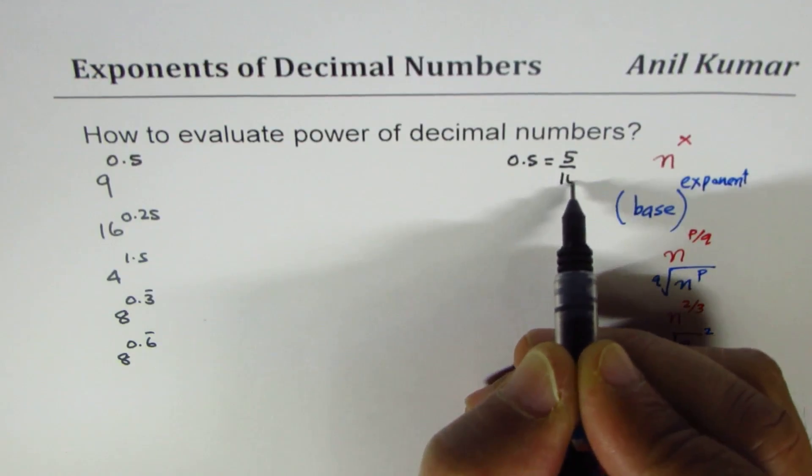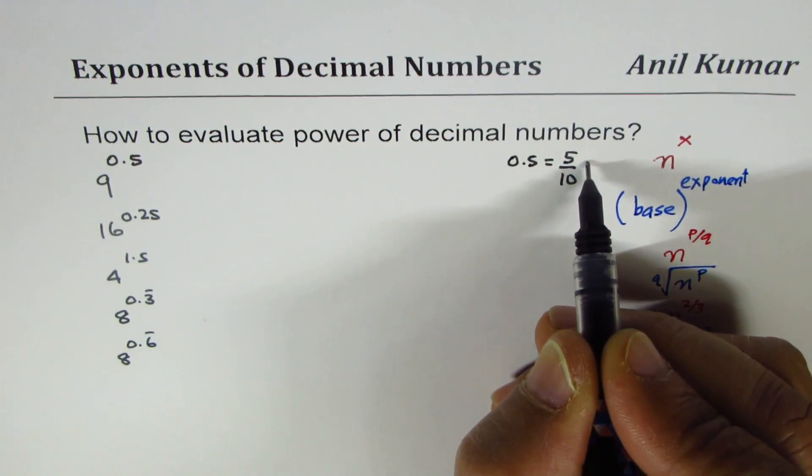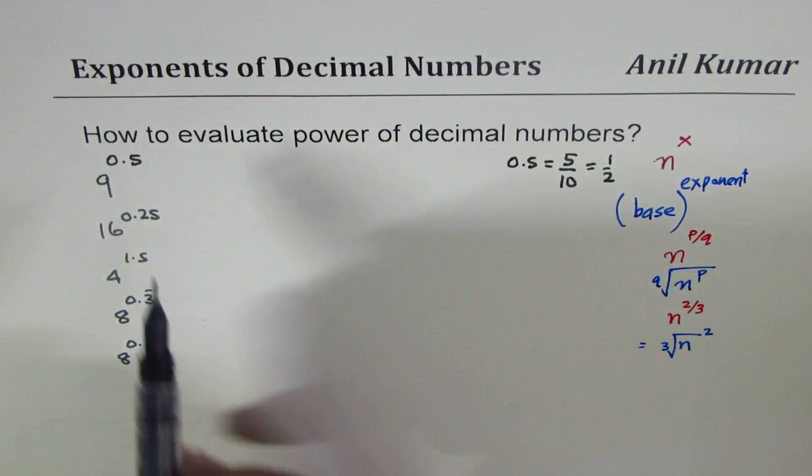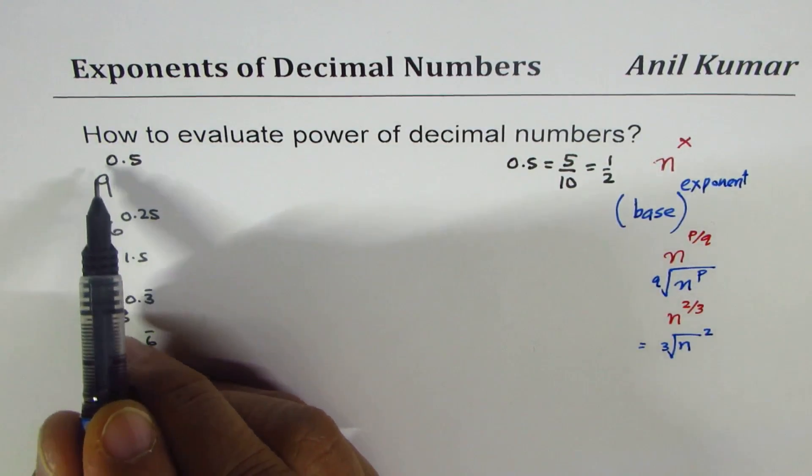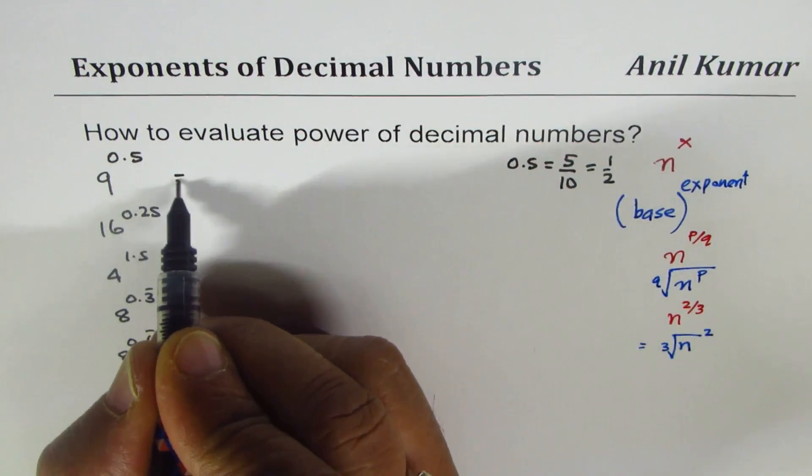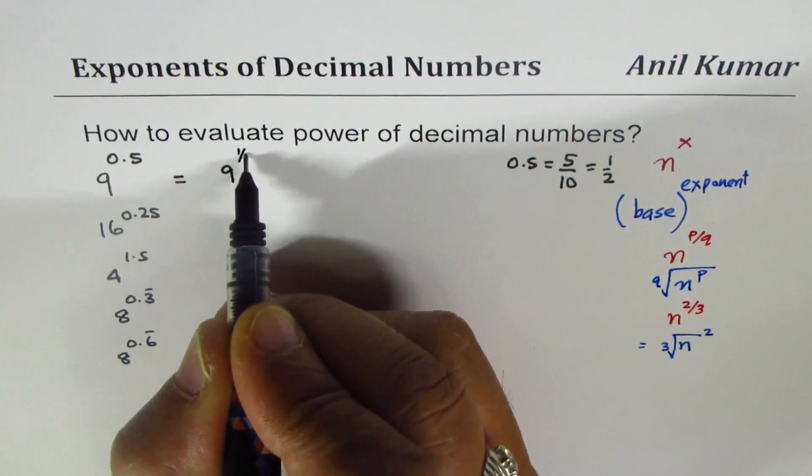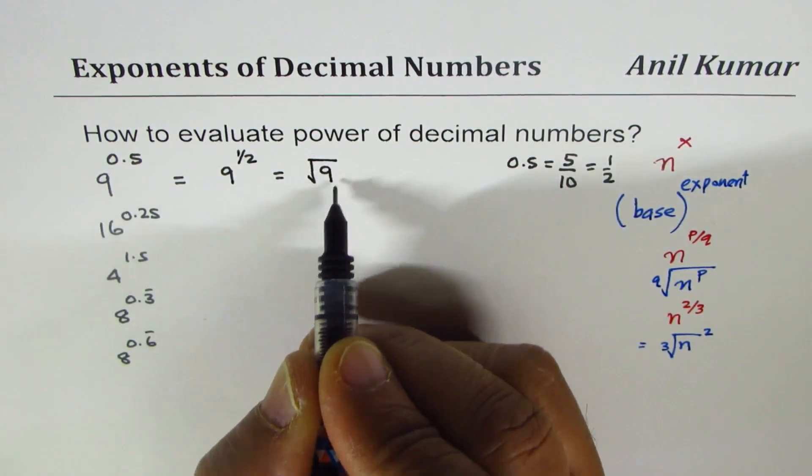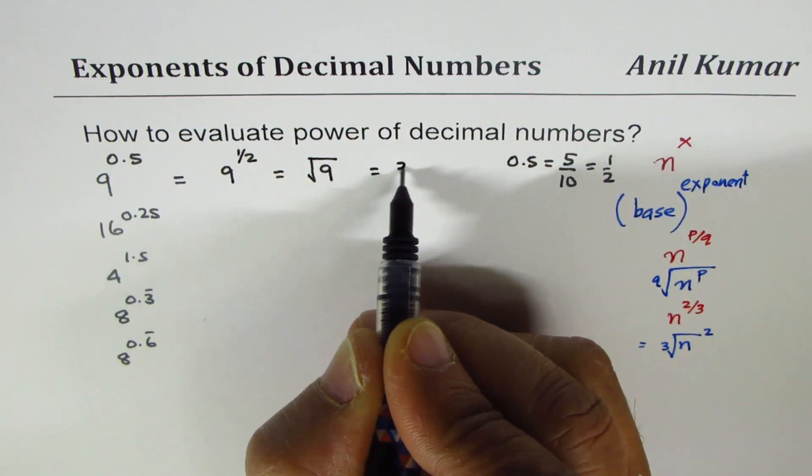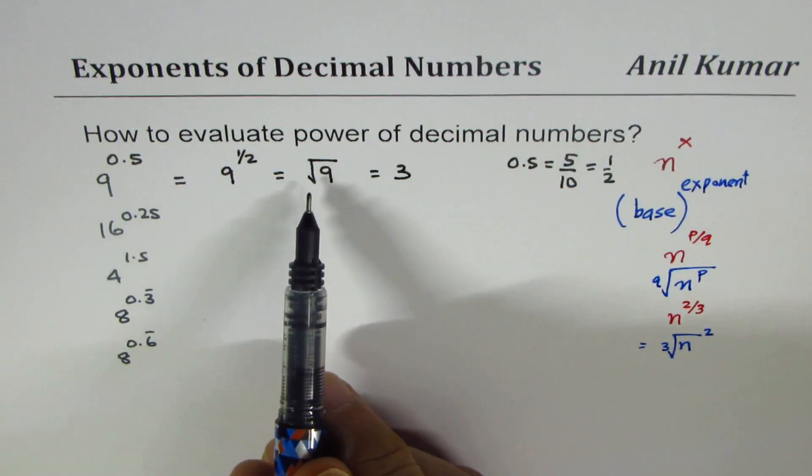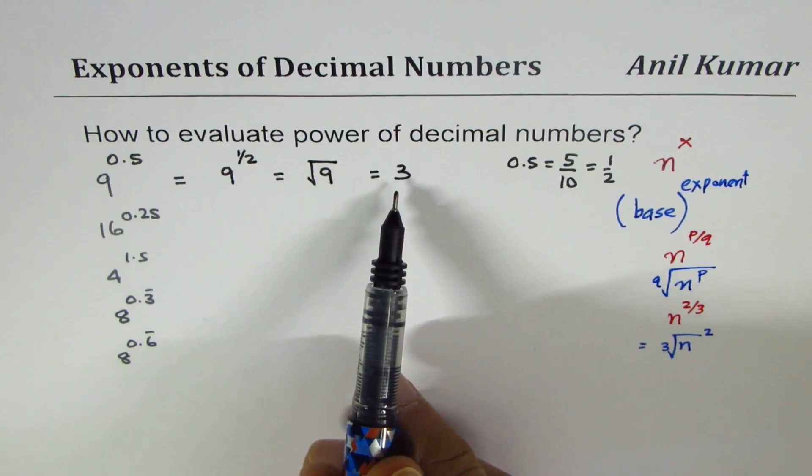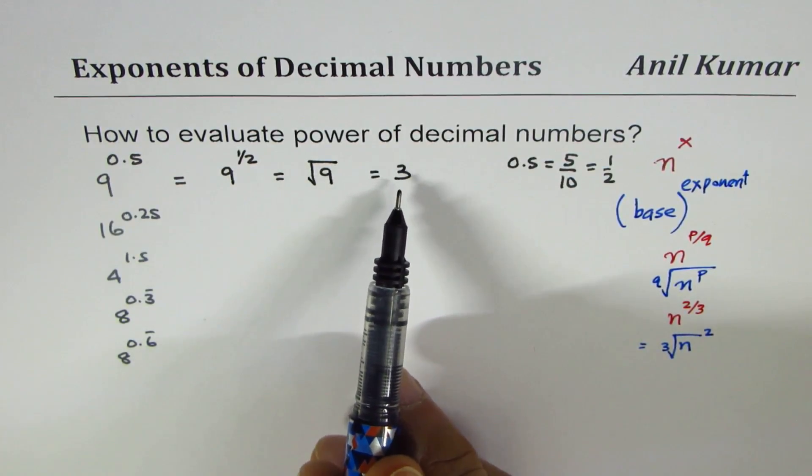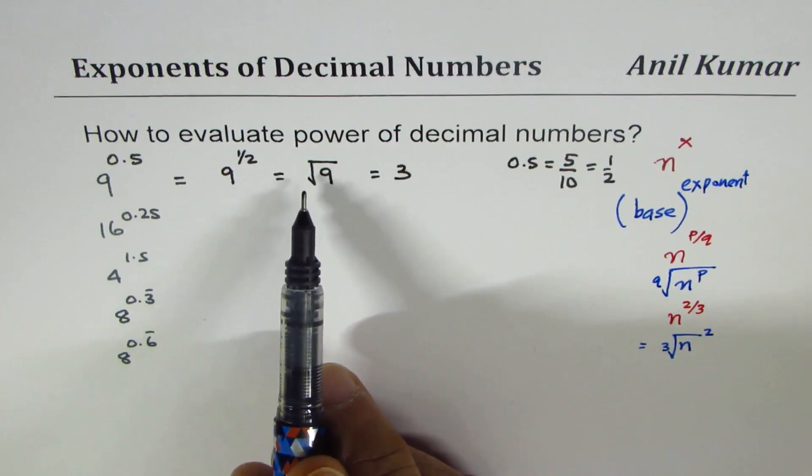If I have 0.5, I can write that as equal to 5 over 10, and 5 over 10 is nothing but half. Half means square root. So the first one, 9 to the power of 0.5, could be written as 9 to the power of half, which is square root of 9, and the square root of 9 is 3. Remember, whenever we do square root we only take the positive value because square roots have only one value which is always non-negative.